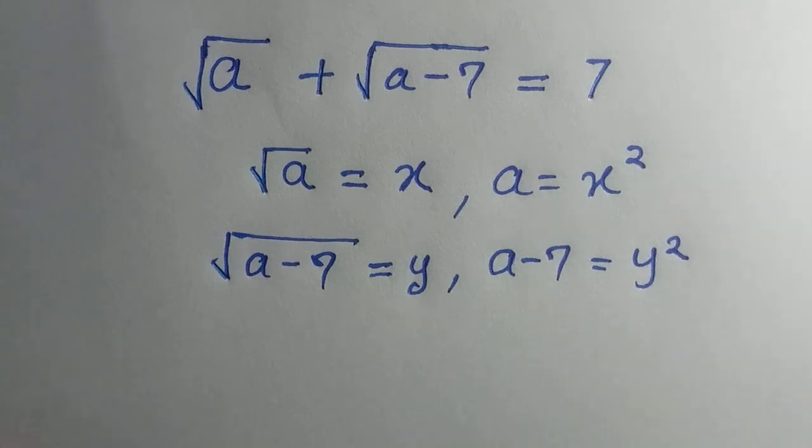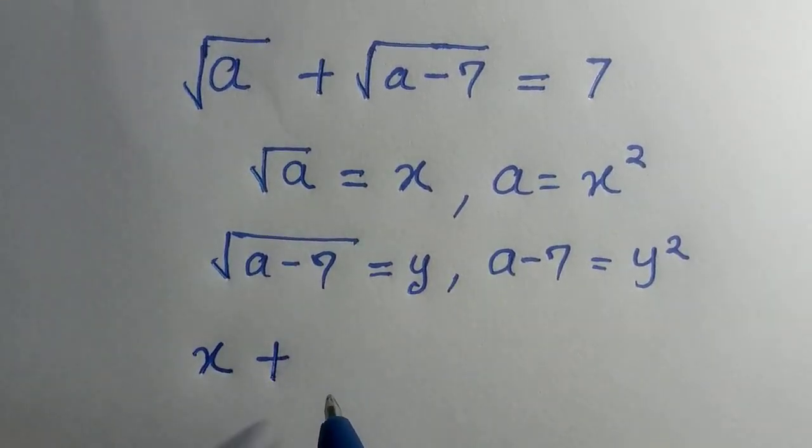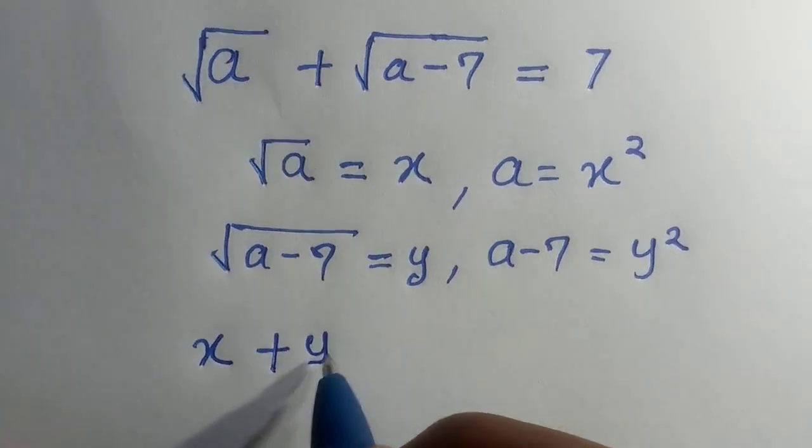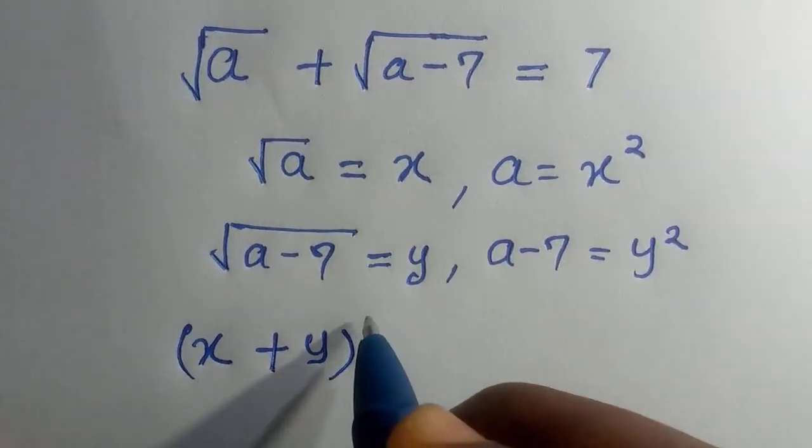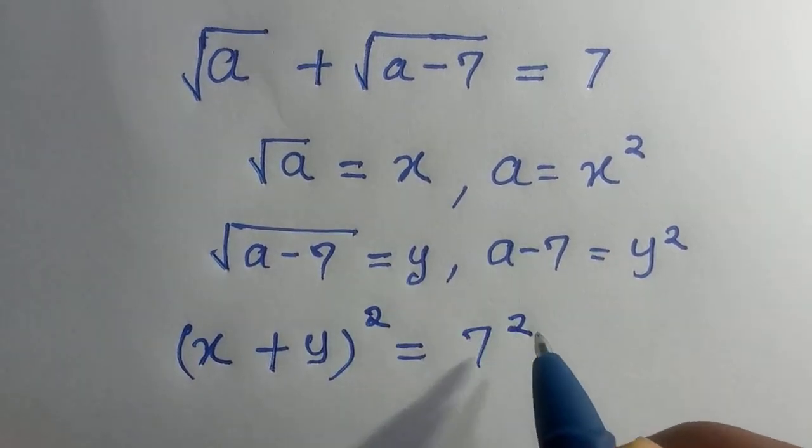So next, we are going to replace them as √a, which is given as x, plus √(a-7), which is given as y, all raised to the power of 2 equals 7².